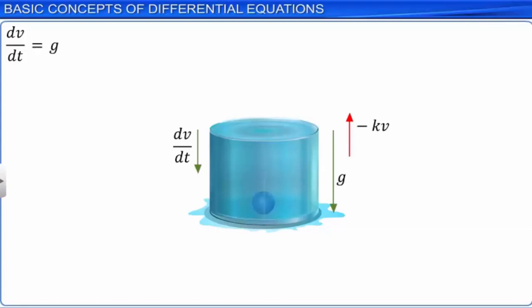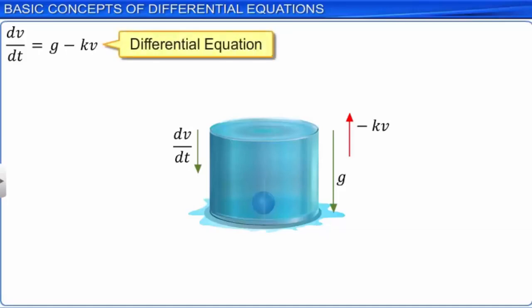The minus sign signifies deceleration. This means that the equation of motion for the acceleration of the body, dv upon dt, is g minus kv. This looks like a polynomial equation in dv/dt; however, the equation is in derivatives, so we can call this a differential equation. This differential equation belongs to the category of ordinary differential equations since we have only one variable, v.